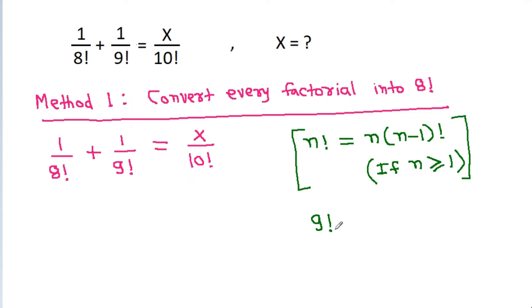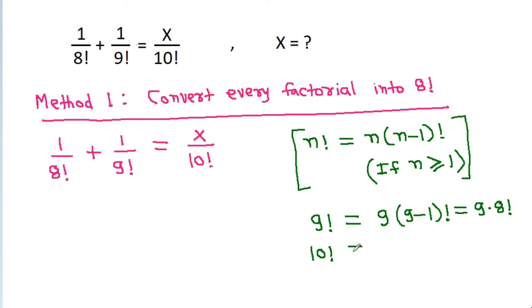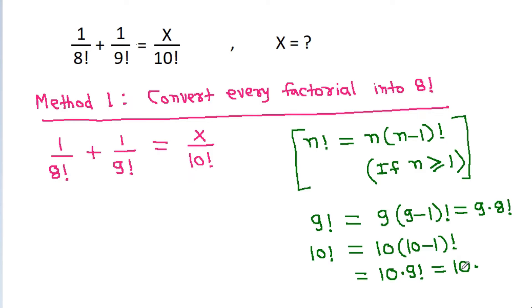So 9 factorial will be equal to 9 times 9 minus 1 factorial, that is 9 times 8 factorial. And 10 factorial will be equal to 10 times 10 minus 1 factorial, which is 10 times 9 factorial, and 9 factorial is 9 times 8 factorial.